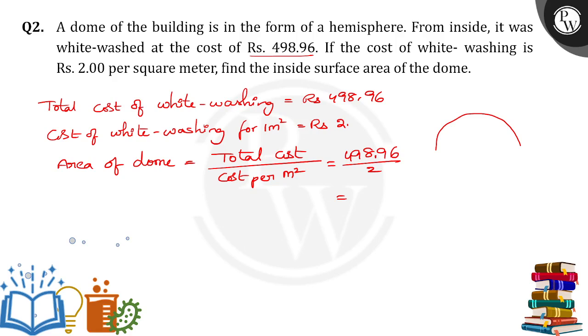So when I divide with 2, how much I will get? 299.98. Okay, sorry. 298.98 is the meter square, the total area of the dome.